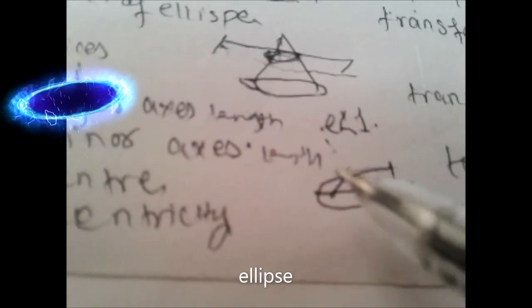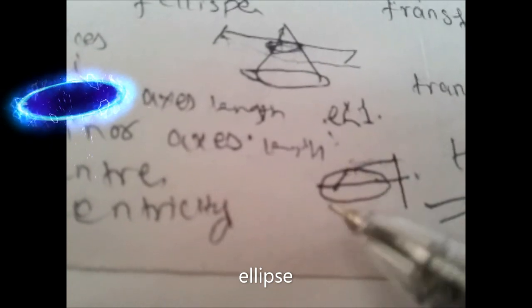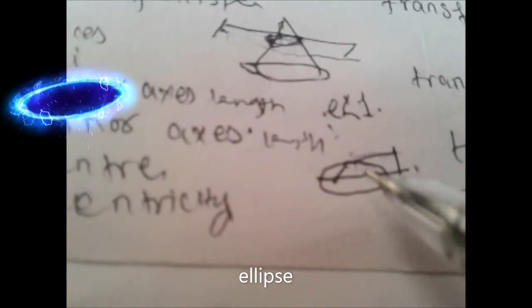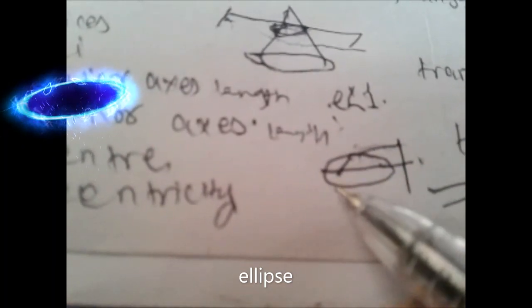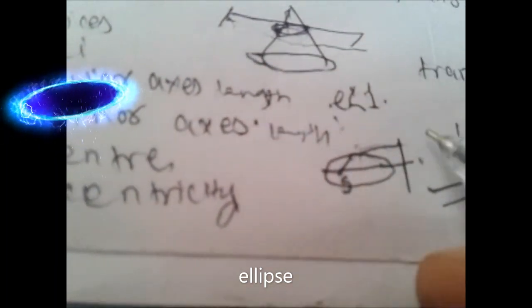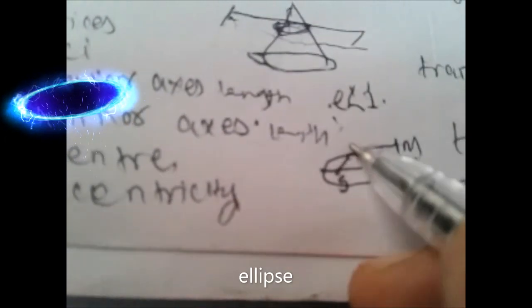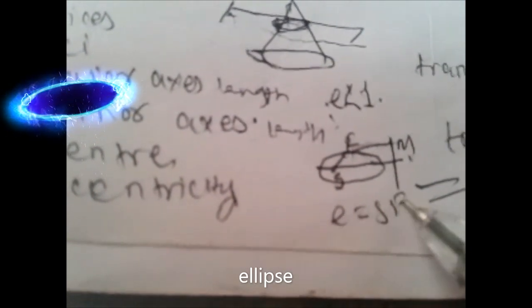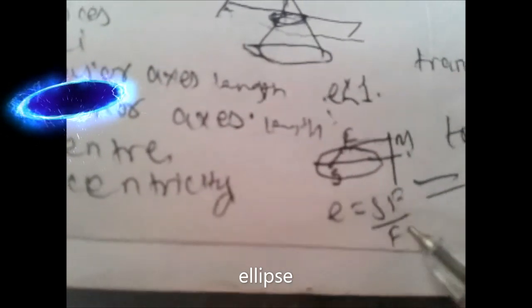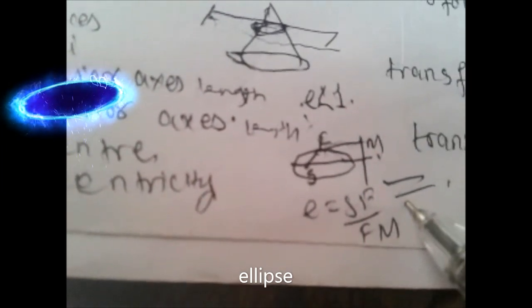If this is S, this is M, and this is F, then eccentricity is equal to SF divided by FM, and this is always less than 1 for ellipse.